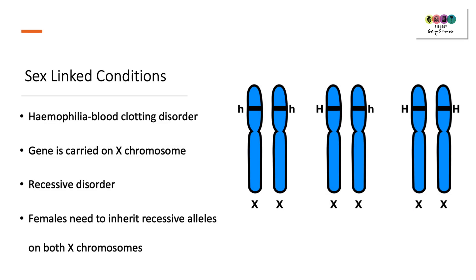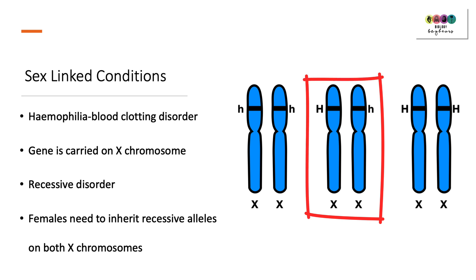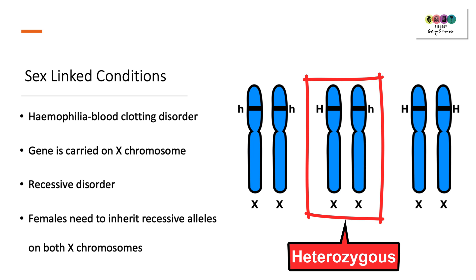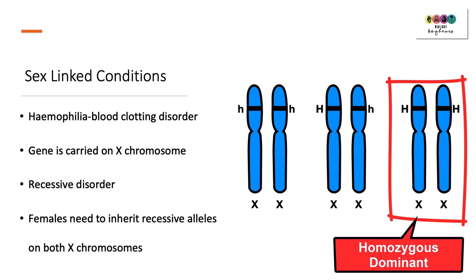One sex-linked condition is haemophilia — a blood clotting disorder where the gene is carried on the X chromosome. It's a recessive disorder, meaning females would need to inherit two recessive alleles, both on the X chromosomes — one from the male and one from the female. Another scenario is the female inherits a dominant allele on one X chromosome and a recessive on the other, so she doesn't have the condition but is a carrier. Or the female could inherit two dominant alleles and therefore is not a carrier and does not have the condition.